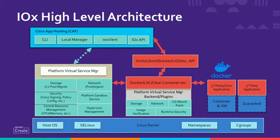On top of this, we have something called CAF — the Cisco Application Framework — which handles CAF app hosting. The framework gives you access to a number of methods to deploy, start, and stop applications. We have an API, a CLI utility called IOX Client, a Local Manager, and also capabilities on the Cisco IOS CLI to interact with those applications.